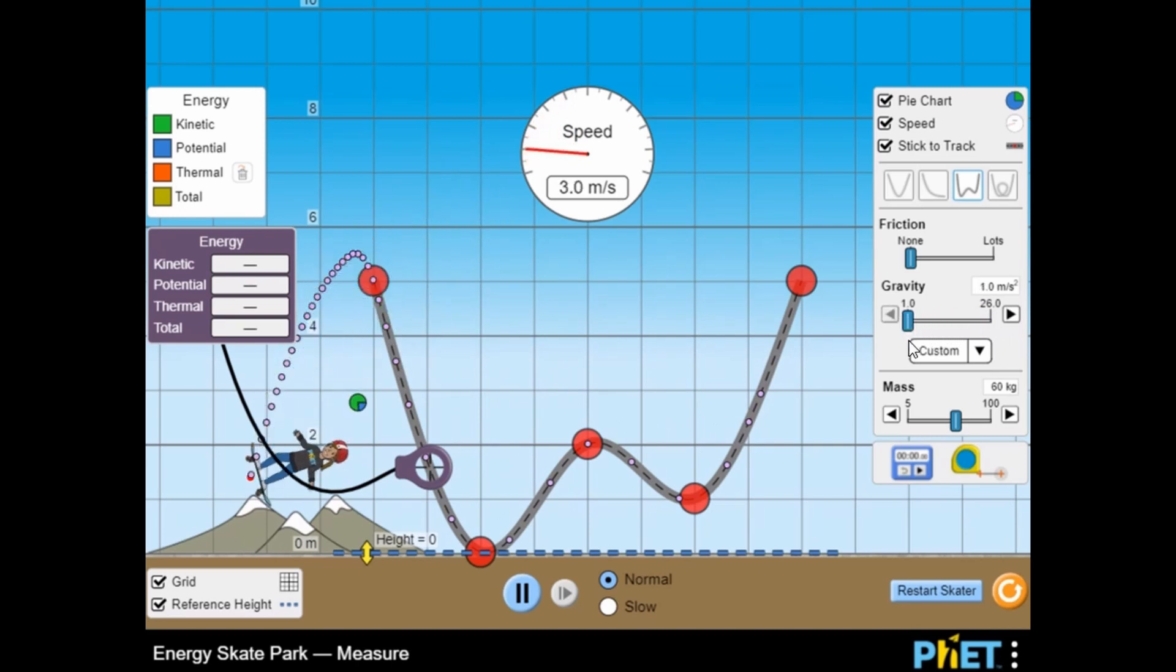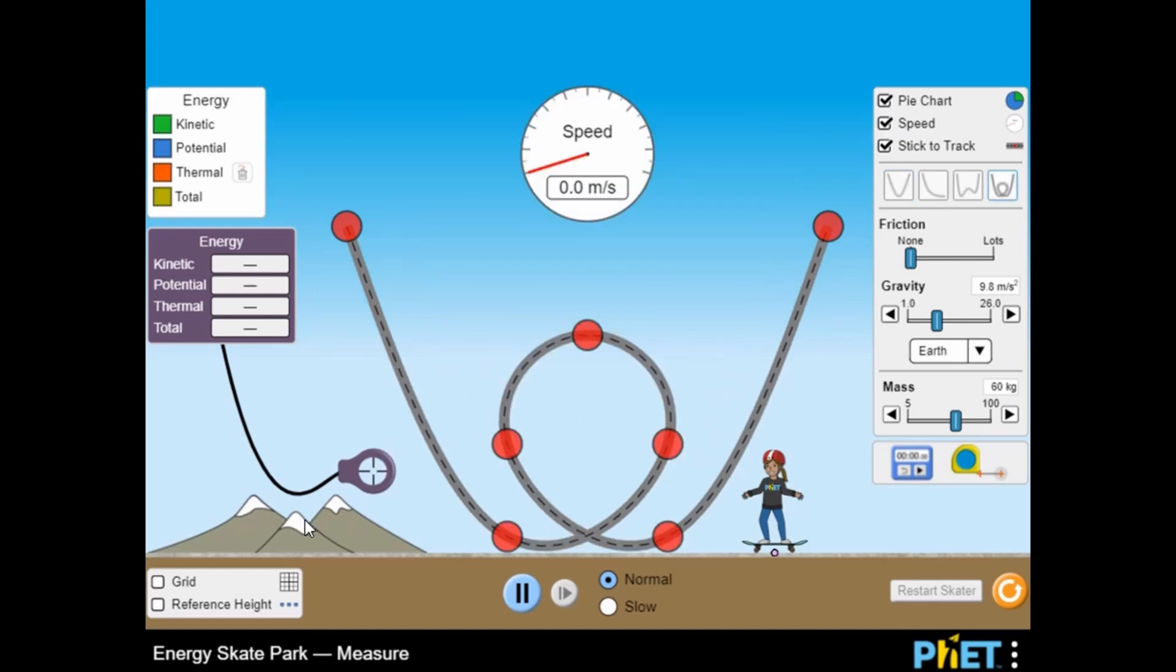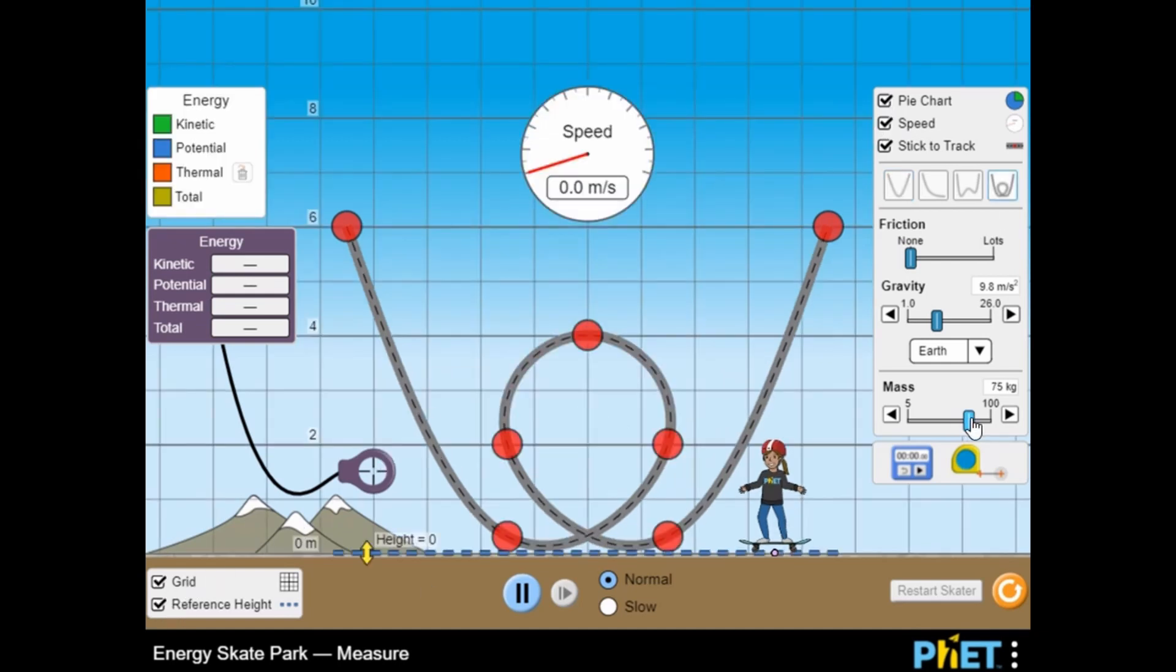Change the amount of friction, gravity, and skateboarder's mass by dragging and dropping the slider buttons to change the different variables in the simulator.